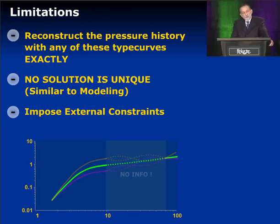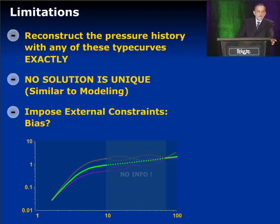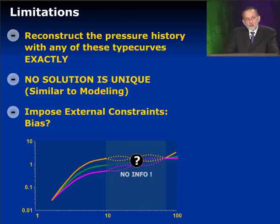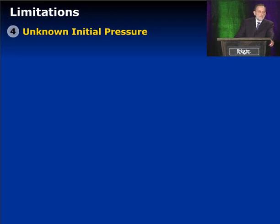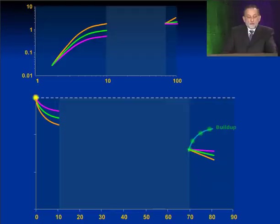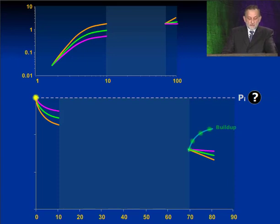As soon as you introduce external information, you're introducing your own bias. That's good sometimes, but not good if you don't really know what external information you're introducing. Hopefully it will be a geological model — that's what we do in modeling. Now let's look at the same thing, but this time we don't know the initial pressure. Here's where we left off when we knew the initial pressure. But in this example, we don't know it, so we don't know where this position is. This first part of the type curve comes from the extrapolation, which is a function of t plus delta t, and also from the actual measured data, the green points over here, which is a function of delta t.